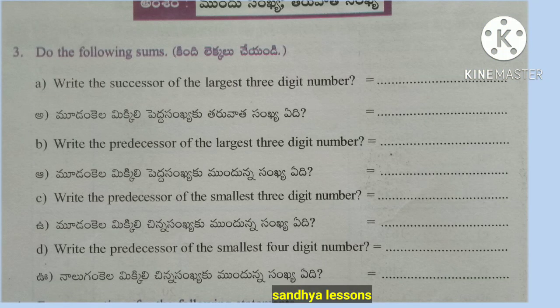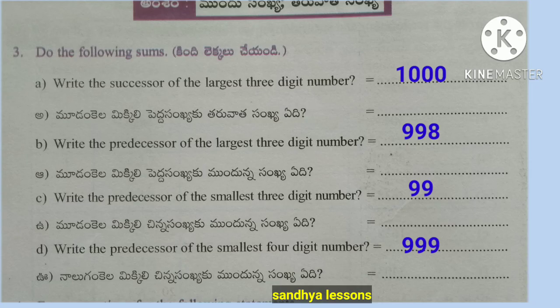Third question: do the following sums. A: Write the successor of the largest three-digit number — answer is 1,000. B: Write the predecessor of the largest three-digit number — answer is 998. C: Write the predecessor of the smallest three-digit number — answer is 99. D: Write the predecessor of the smallest four-digit number — answer is 999.